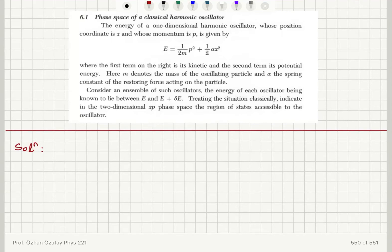Phase space of a classical harmonic oscillator. The energy of a one-dimensional harmonic oscillator, whose position coordinate is x and momentum is p, is given by E equals p squared over 2m plus one half alpha x squared, where the first term on the right is its kinetic and the second term its potential energy.